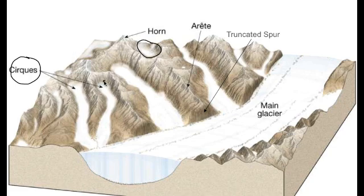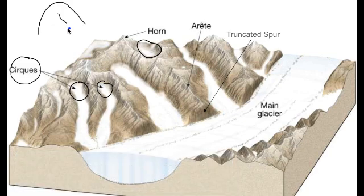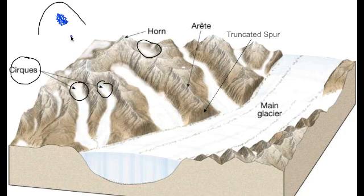Next word: cirque — spelled C-I-R-Q-U-E. Here's a cirque right up here, another one here, and another over here. Cirques are bowl-shaped depressions that form because of ice wedging. Picture a rounded mountain with a crack in it — water wiggled into that fracture, froze, expanded, and got bigger. This process keeps happening until you have a massive piece of ice embedded into the side of the mountain, making it jagged and creating this bowl-shaped depression. That's what a cirque is.